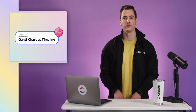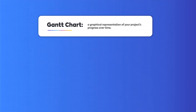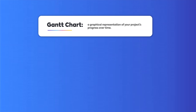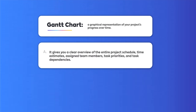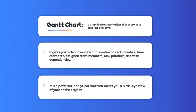First off, what is a Gantt chart? A Gantt chart is a graphical representation of your project's progress over time. It gives you a clear overview of the entire project's schedule, time estimates, assigned team members, task priorities, and task dependencies. It is a powerful analytical tool that offers you a bird's eye view of your entire project.